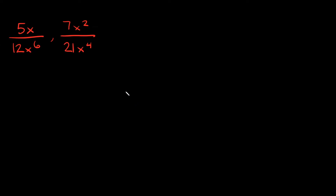In this video I'm going to teach you how to find the least common denominator, or the lowest common denominator, of a group of rational expressions. In order to find the LCD of two rational expressions, all you have to do is break the denominators down into their factors. We're going to start by finding the factors of the numbers using the factor tree method.